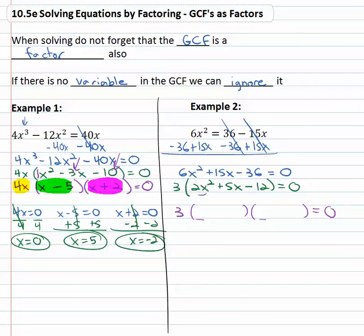And then first times first equals first, the only way to get 2x² is 2x times x. Last times last equals last, twelve. There's a couple ways, it could be six and two, it could be four and three, let's try four and three.